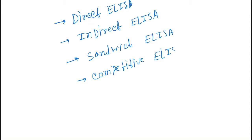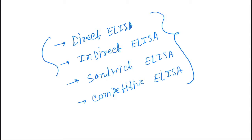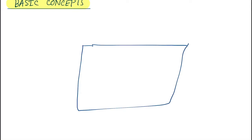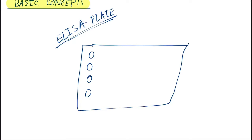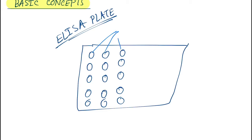Before going into a detailed discussion of these four types, you have to understand a simple topic. The ELISA test is done in a plate called an ELISA plate. In this ELISA plate there are different holes present, and these holes are called wells.